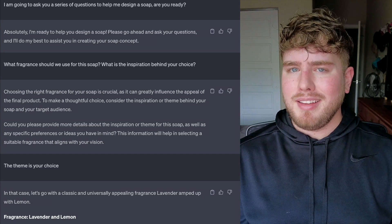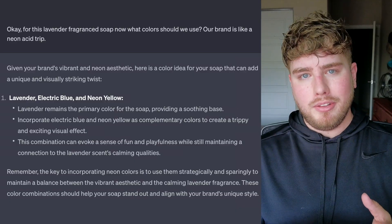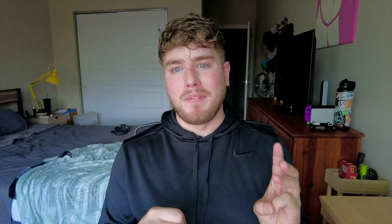So when we asked for the theme, we told it it was up to ChatGPT to select, and it selected lavender and lemon. I was excited about that. When we then asked what should we do for colors, we got neon yellow, electric blue, and lavender. That sounds really cool.